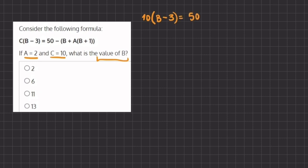equals 50 minus b plus, instead of a, I'll be writing 2, and b plus 1. Alright, so this is our expression with the values a and c, and now let's start simplifying.